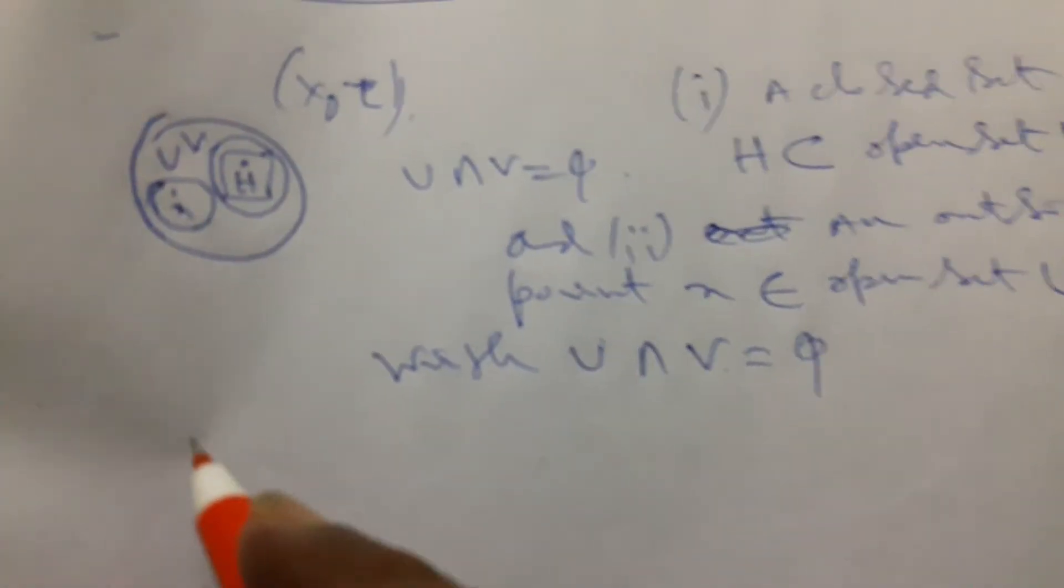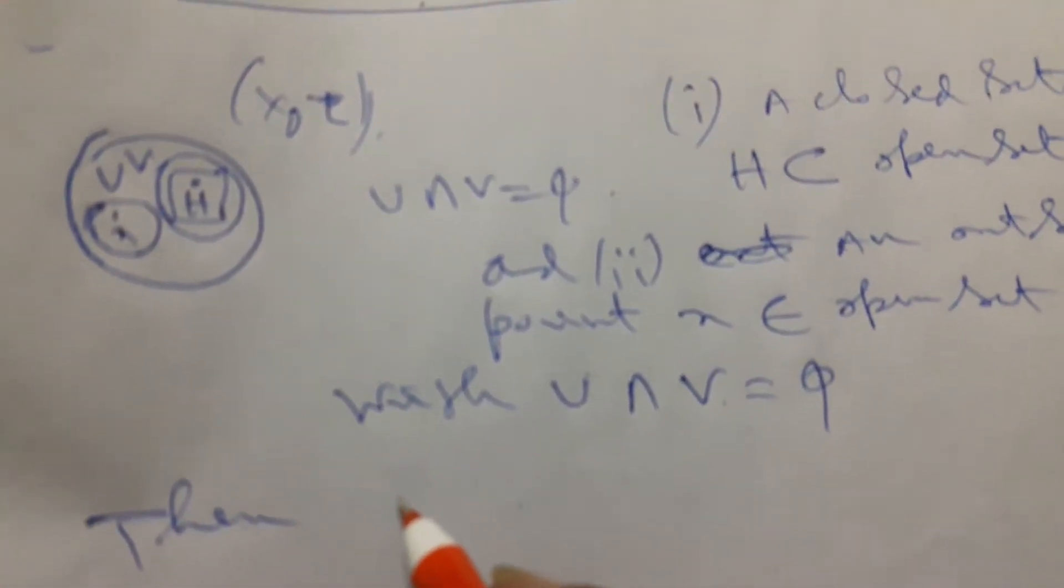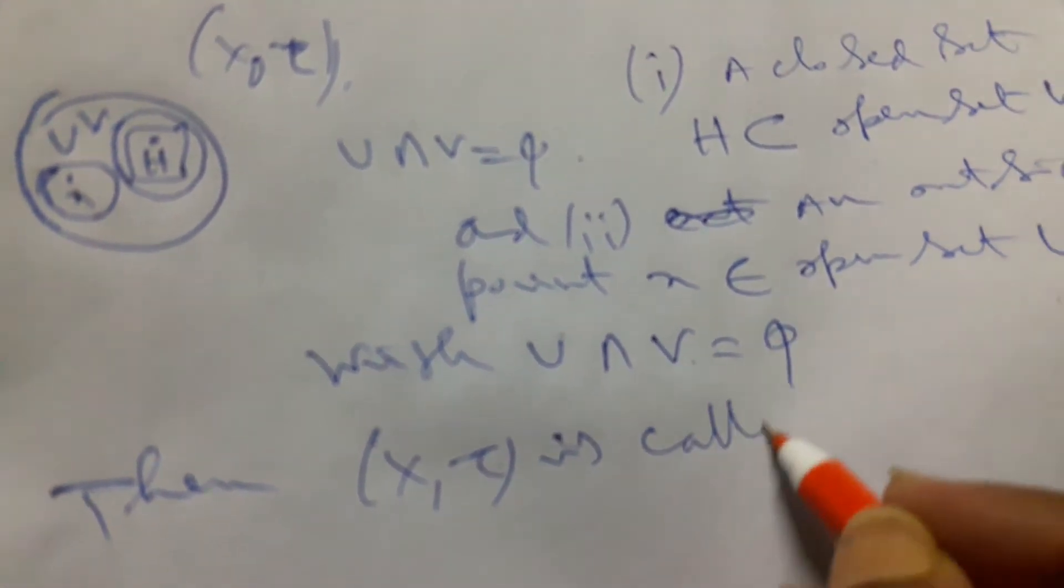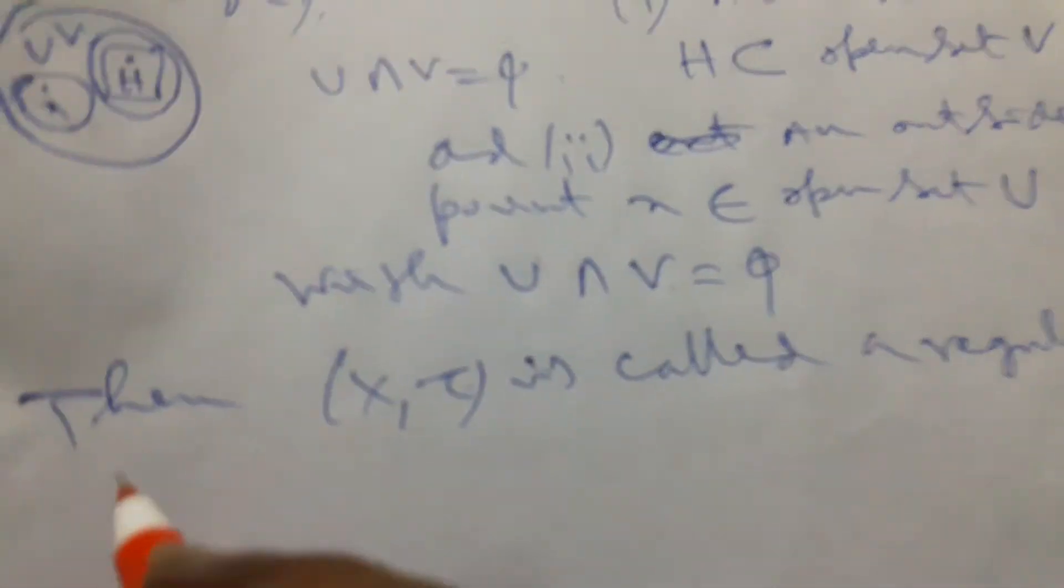That means empty. Then x tau is called a regular space.